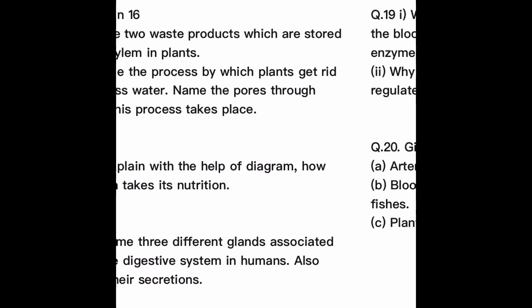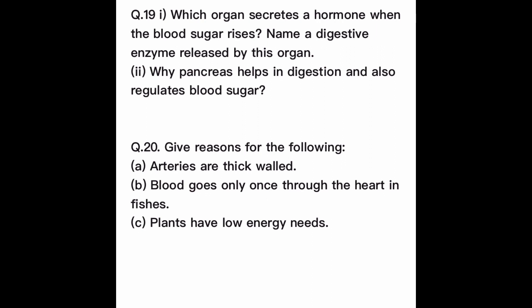Question number 19: Name the organ that secretes a hormone when blood sugar rises — the organ is the pancreas, which secretes the hormone insulin. Name a digestive enzyme released by this organ — any enzyme like pancreatic amylase, pancreatic lipase, trypsin, or chymotrypsin. Why does the pancreas help in digestion and also regulate blood sugar? Because the pancreas is a heterocrine or mixed gland — as an exocrine part it secretes digestive enzymes, and as an endocrine part it secretes hormones like insulin and glucagon.